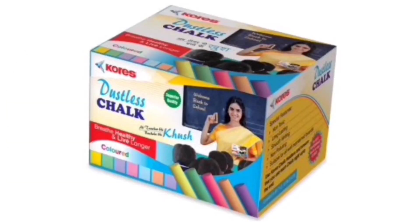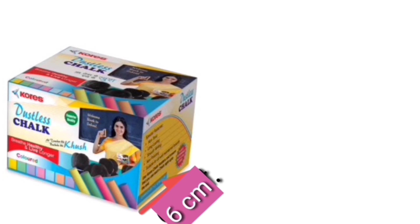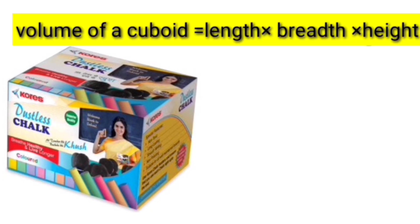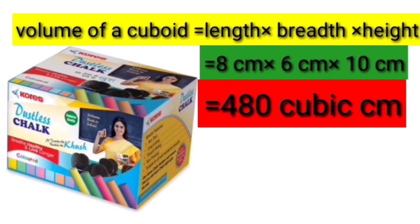Let's move to the next question. Here we have a chalk box. This box is of the shape of a cuboid, and we have to find out its volume. The length of this box is 8 cm, the breadth is 6 cm, and the height is 10 cm. Its volume is length into breadth into height, that is 8 cm into 6 cm into 10 cm, which equals 480 cubic cm.